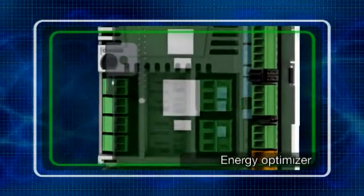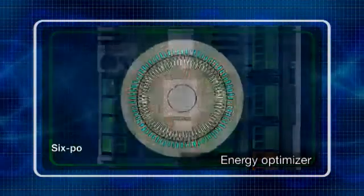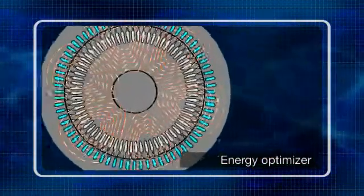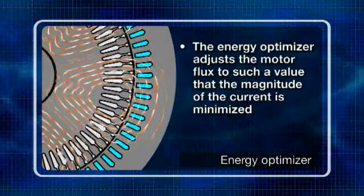The energy optimizer is located within the CPU on the drive's control board. It works by adjusting the motor flux to such a value that the magnitude of current is minimized.